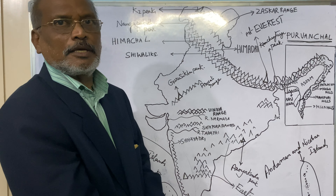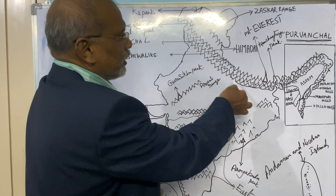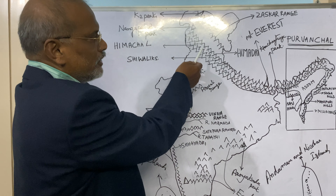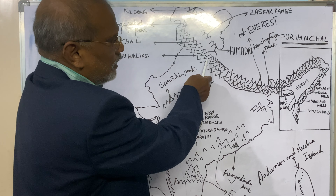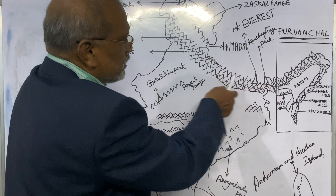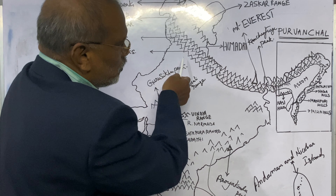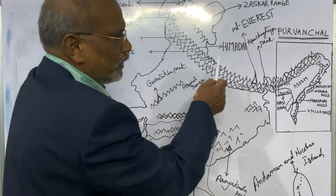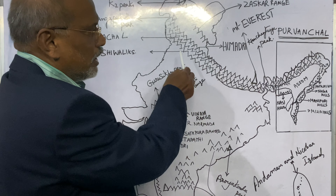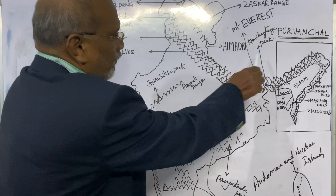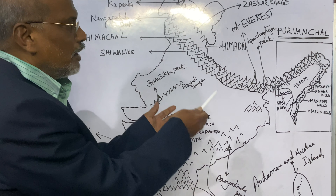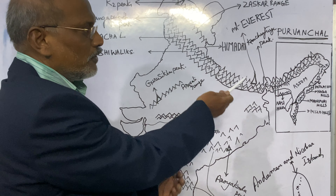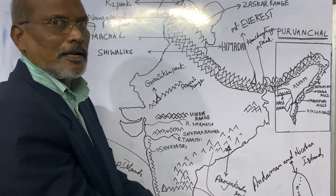Himalayas' total geographical extent is 5 lakh square kilometers. The Himalayan ranges run west to east with a distance of 2,400 kilometers and a geographical area of 5 lakh square kilometers. These Himalayas comprise three parallel ranges.